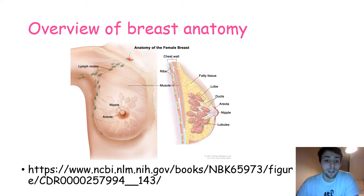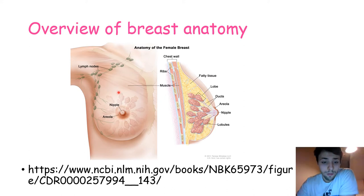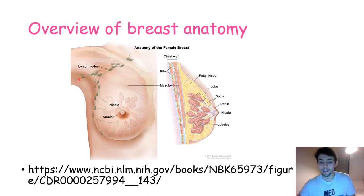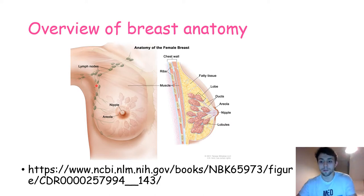Here we can see the lymph drainage of the breast, which is also very important. A lot of the drainage can go to the axilla, so sometimes breast cancer can present as a swelling in the armpit — a swollen lymph node. It's always important to check these lymph nodes when you suspect breast cancer.